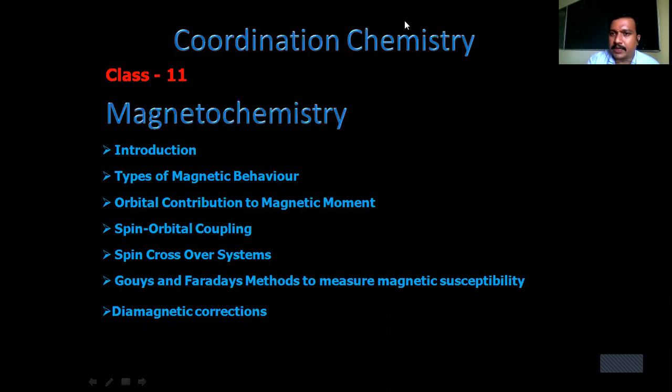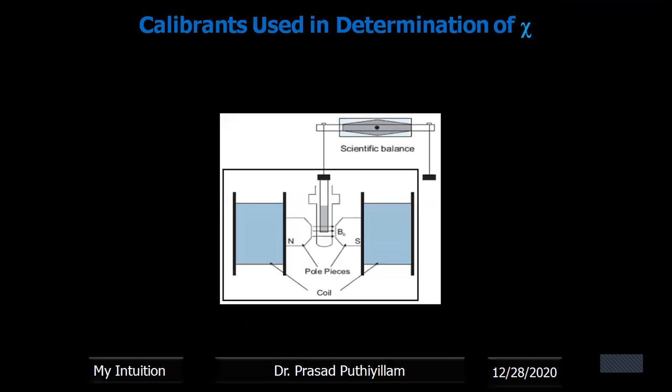Here I'm explaining about diamagnetic corrections. Not only diamagnetic corrections, in the previous class I explained about Gauss and Faraday's method to measure magnetic susceptibility, in which the calibrant used was not explained in that video presentation. So here I include that one as well as the temperature independent paramagnetism.